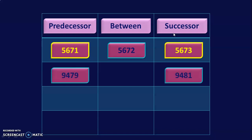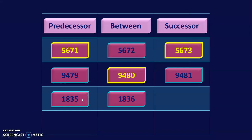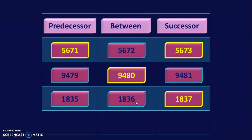Let us move on to the next example. Here I have given the predecessor and the successor, and you will have to find the between number. The rule is that it will be 1 more than the previous number and 1 less than the next number. What is the number between 9479 and 9481? It will be 9480. So 9480 is 1 more than 9479 and 1 less than 9481. The next example gives two numbers in series: 1,835 and 1,836. To find the successor, add 1: the answer is 1,837.